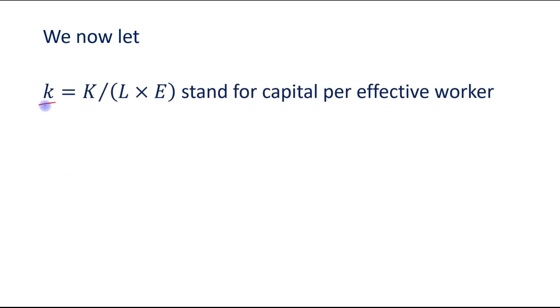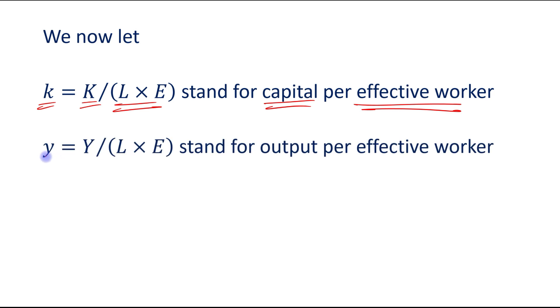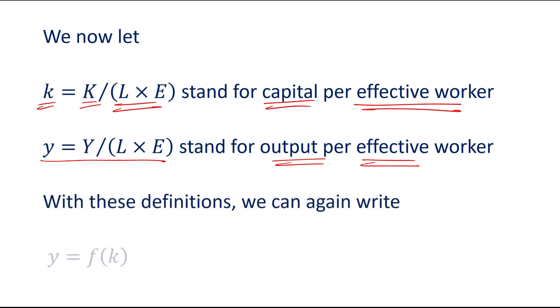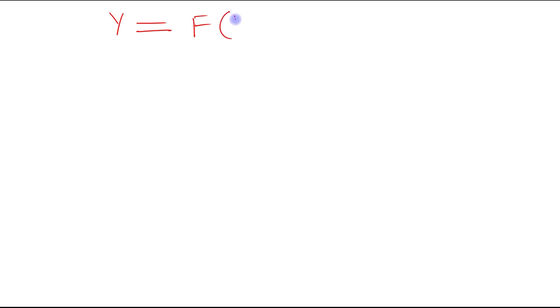We now let this small k equal to K divided by L times E, standing for capital per effective worker. Then this stands for output per effective worker. With these definitions we can again write that output per effective worker is a function of capital per effective worker. Basically, y is a function of capital and effective labor.